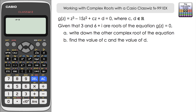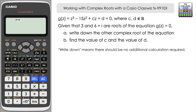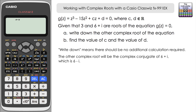For part A, write down the other complex root. We're already given the real root which is 3, and one of the complex roots is 6 plus i. The phrase 'write down' indicates there's no extra calculation needed — we just use our knowledge. The other complex root will be the complex conjugate of the given root, which is 6 minus i, just swapping the plus for a minus.